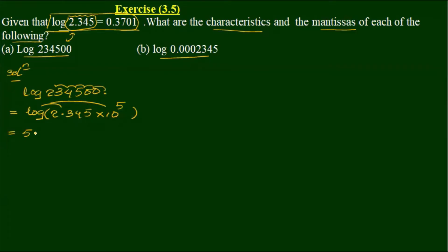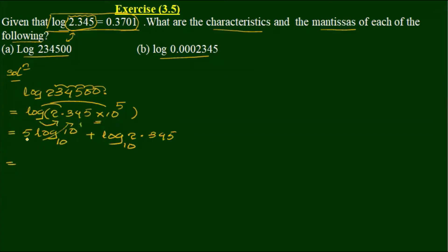So, log 234500 base 10. That is the same as log 2.345 times 10^5 base 10, which equals log 2.345 plus 5 log 10. So we have 5 plus 0.3701, giving us 5.3701.